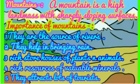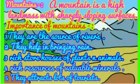Mountains differ in shapes and heights. Young mountains like the Himalayas are very high and have pointed peaks. The Alps, the Andes, and the Rockies are also young mountains. Old mountains like the Aravalli and the Alpa chain are low in height and have rounded tops, because of erosion by wind and water over many years.